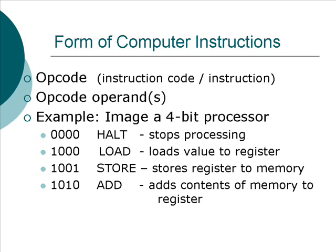Our processor is a 4-bit processor, and our manufacturer tells us there are only four commands. If it's four zeros, that's a halt instruction that makes the processor stop. 1000 means load an immediate value into register A. Store says store the contents of register A to a specified memory location. And 1010 adds the contents of a specified memory location to the register. We're going to write a little program that makes use of these opcodes.